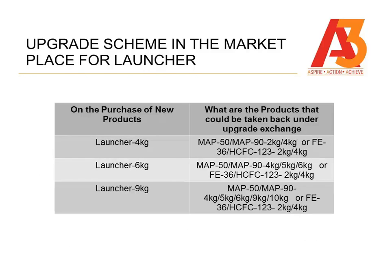Let's look at what products can be upgraded to a launcher. On purchase of the new launcher 4kg, the eligible products to take back are: Map 50, Map 90 2kg or 4kg, or Fe36, HCFC 123 2kg or 4kg. For those products, you can offer a launcher 4kg.